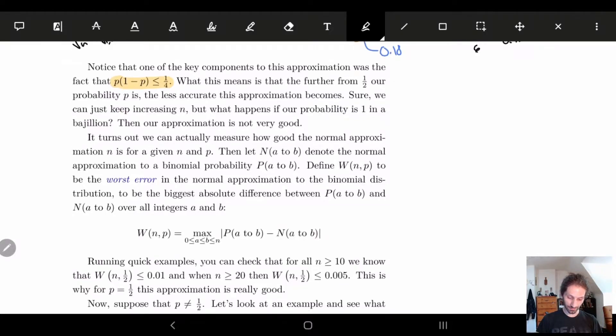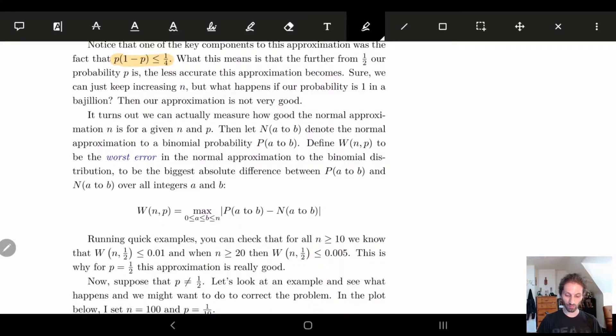So what we want to do is adjust our normal curve to be better for most of the reality. For example, what happens if we have one over a bajillion for n? Even if we have a really tiny n or a really tiny p, it doesn't matter how big our n is.